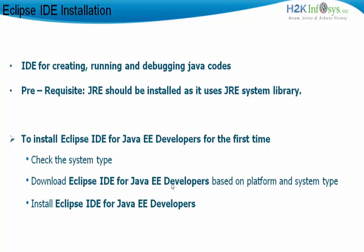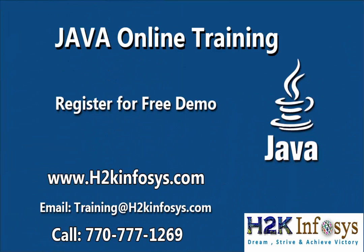After we download Eclipse IDE for Java EE developers, we are going to install it in our system. Before that step, let me explain what an IDE is. An IDE is nothing but an interface development environment — it provides an environment to create codes, to debug codes, and to run codes. Eclipse is an IDE for the Java platform, and it will ease our coding process. We can create Java codes, run them to check results, and debug for syntax or logical errors.